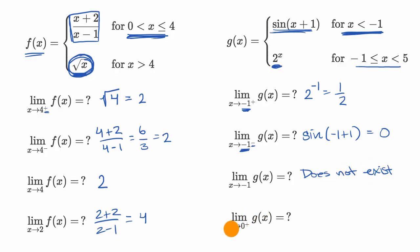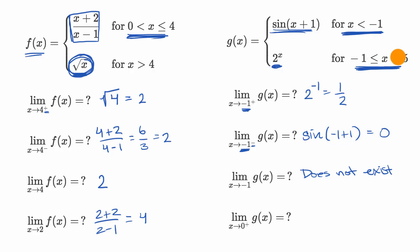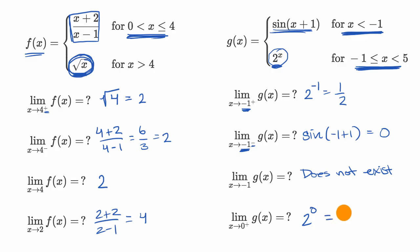What's the limit of g of x as x approaches zero from the right? If we're approaching zero from the right, we are going to be in this case right over here. Zero is definitely in this interval, and over this interval this is going to be continuous. So we can just substitute x equals zero: it's going to be two to the zero, which is equal to one.